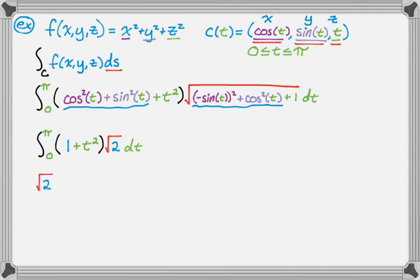So this, I'm going to pull out the radical 2, I'm going to integrate this thing, so I get t plus 1 third t cubed from 0 to pi. And then when you plug in pi, you get radical 2, pi plus pi cubed over 3. When you plug in 0, you just get 0, so we're done.